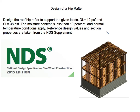For this video I'll be designing and analyzing a hip beam. The dead load for this roof system is 12 pounds per square foot, the snow load is 38 pounds per square foot, the moisture content is less than 19 percent, and normal temperature conditions apply. Reference design values and section properties are taken from the NDS supplement — the National Design Specification for wood construction, 2015 edition.